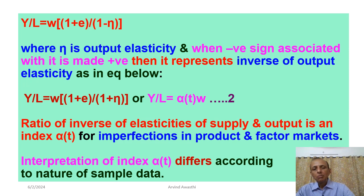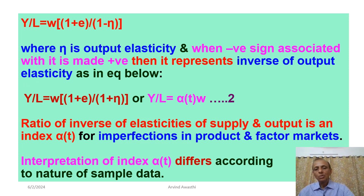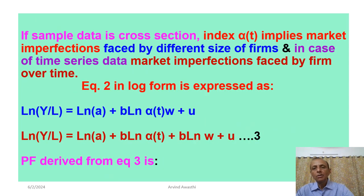अगर perfect competition होता, तो Y/L = W होता। लेकिन चूंकि imperfect competition है, तो product और factor market में कितना imperfection है, उसका index alpha_T बताएगा — जो बनेगा (1+E)/(1+Eta) से। Interpretation of alpha_T differs according to nature of sample data: cross section data में alpha_T implies imperfections faced by firms of different sizes; time series data में market perfections faced by firm over time।